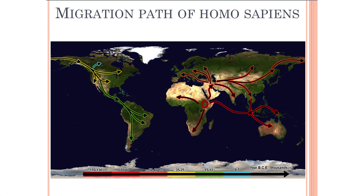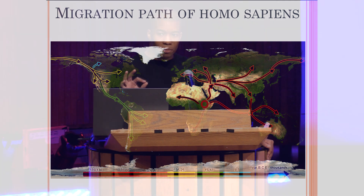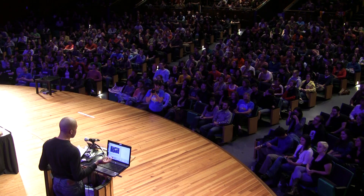Starting with this graphic of the migration path of Homo sapiens: humans originated in Ethiopia around 250,000 years ago, and within about 150,000 years humans were practically everywhere. In a geographic heartbeat, we had dominated almost every corner of the globe and almost every climate imaginable.